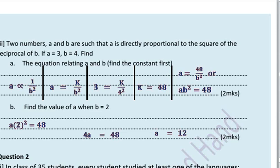Find the value of a when b is 2. So using the equation we just have to put in the value of b and solve for a. We will have a into 2 squared is equal to 48, and 4a is equal to 48 giving us a to be equal to 12.